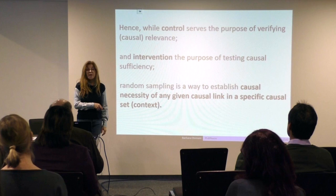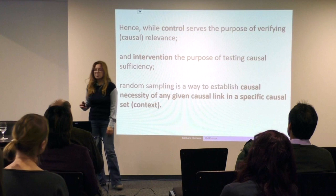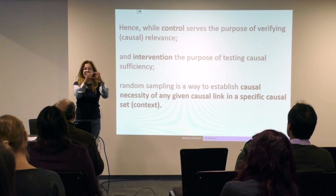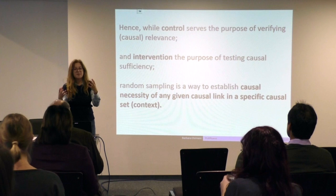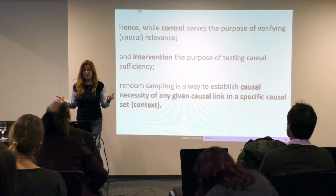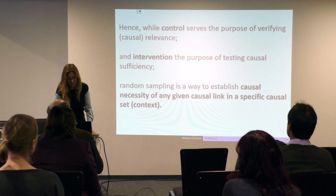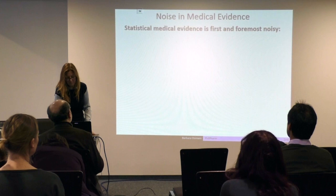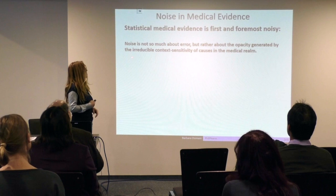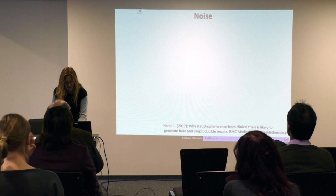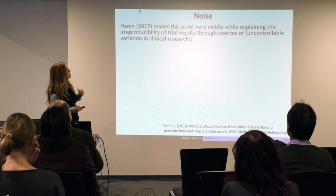In some sense you are sure about something, but there is uncertainty about latent variables that you might not have taken into account. Randomization intuitively solves this, but not everybody agrees — and that's where I come to now. Statistical medical evidence is first and foremost noisy. It's not about error, but rather about the opacity generated by the irreducible context sensitivity of causes in the medical domain. I'm quoting Halin in a recent study. Halin makes this point very vividly while explaining the irreproducibility of trial results through sources of uncontrolled variation in clinical research.